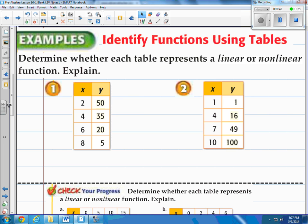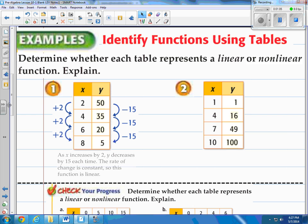Let's take a look at number 1 in the X column. You notice that the numbers are going up by 2, while in the Y column the values are going down by the same amount which is negative 15. We would say then as X increases by 2, Y decreases by 15 each time. The rate of change is constant, so this function is linear.